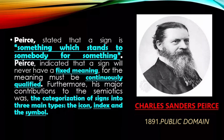Charles Sanders Peirce stated that a sign is something which stands to somebody for something. Peirce indicated that a sign will never have a fixed meaning — the meaning must be continuously qualified. In every sign in society, there is a unique meaning that no one can hold to be fixed. For example, in our country love means family, while in another country love is the feeling that a person can feel. No one can state that their meaning is the only right meaning for a particular sign.